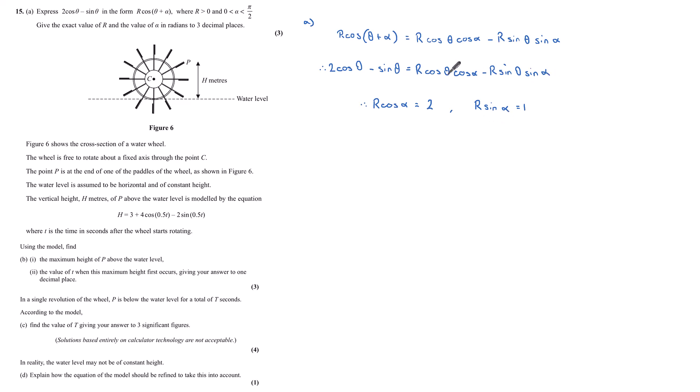Now that I have these two values, this is standard practice in these compound angle questions. I can find tan of α by dividing r sine α equals 1 by r cos α equals 2, and so by dividing them I get tan α equals a half. This gives me a value for α of 0.464, and that is to three decimal places.